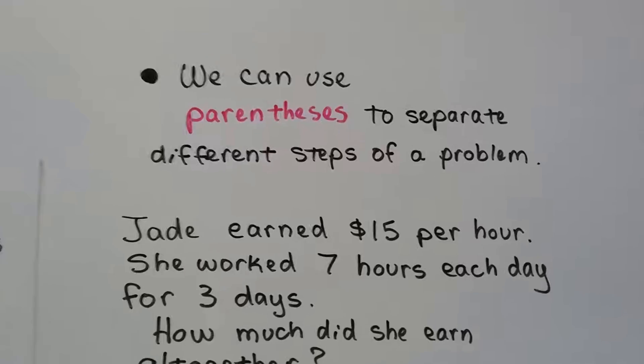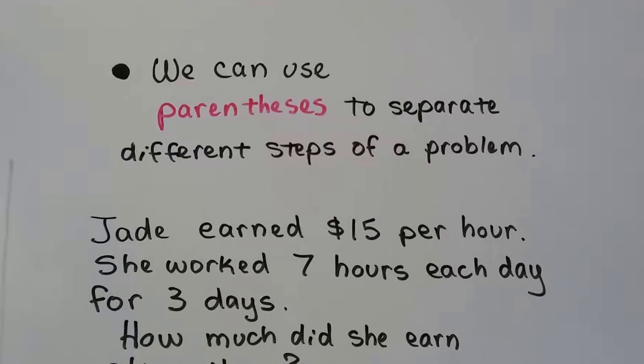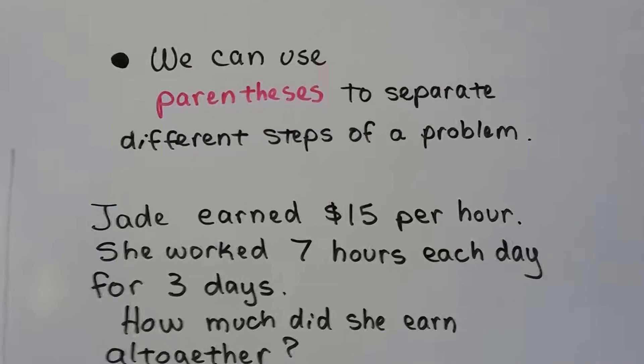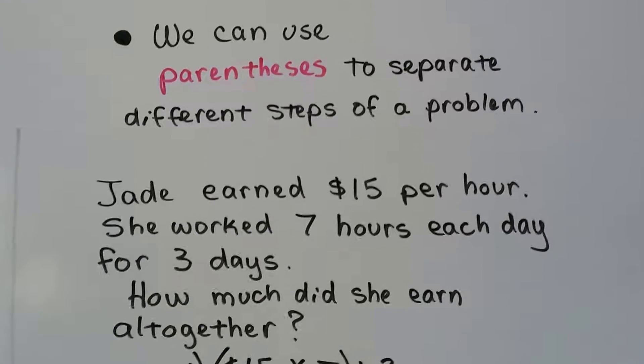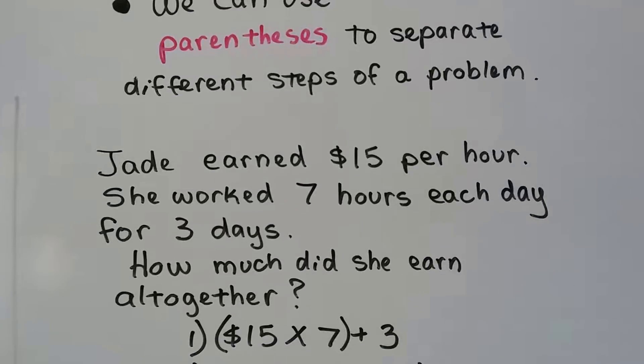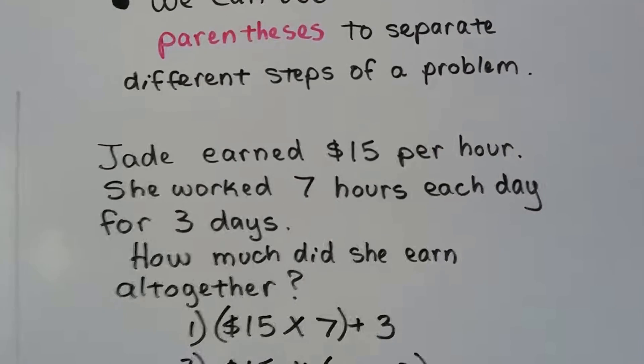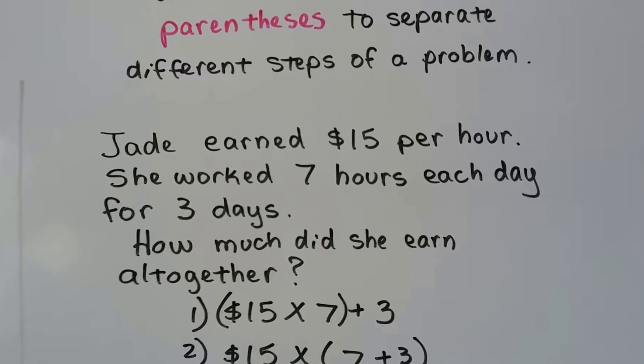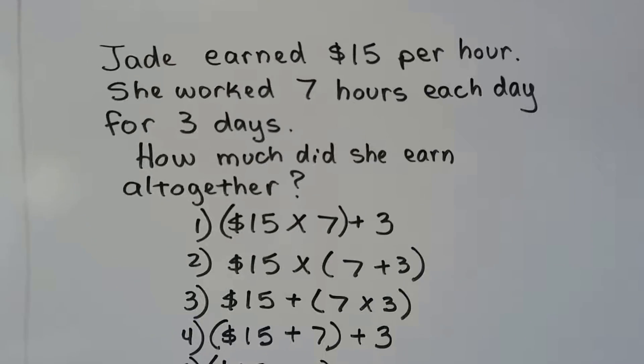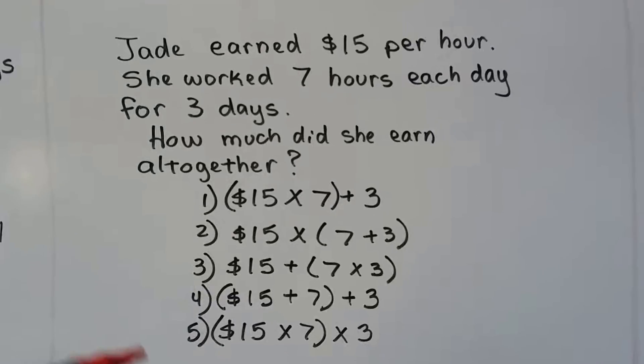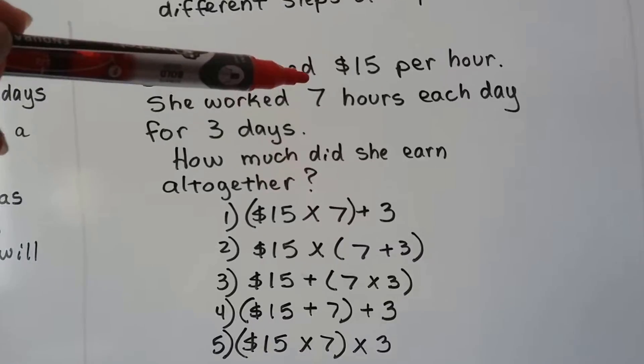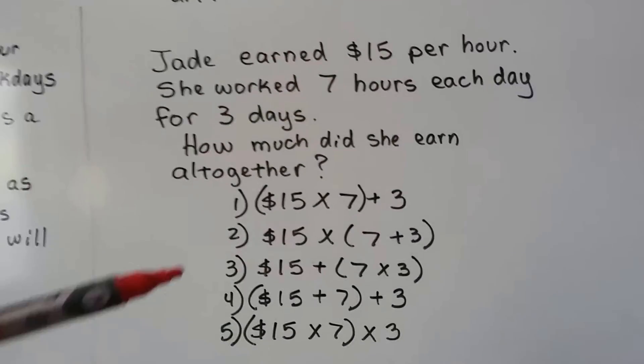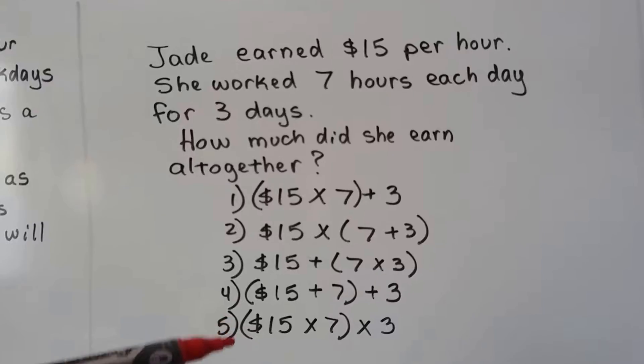All right, let's try another one. We can use parentheses to separate different steps of a problem. So if you can see that there's a couple of different steps or even three or more steps, use parentheses. So Jade earned that $15 per hour, and she worked seven hours each day for three days. How much did she earn altogether? So which one of these would be the correct equation to find the answer to what they're asking? $15 per hour, seven hours each day for three days. Which one of these would you choose?